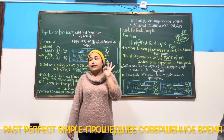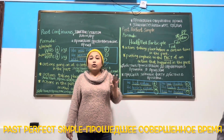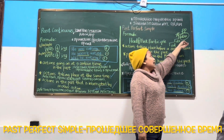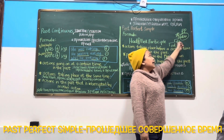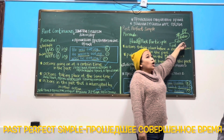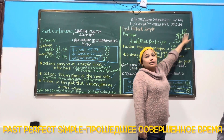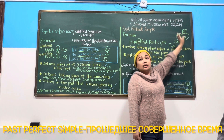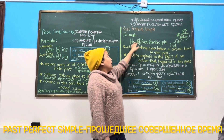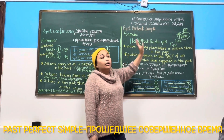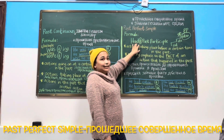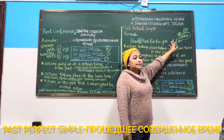Past participle is the third form of a verb — treti uraven glagol. For example: eat, ate, eaten; buy, bought, bought; see, saw, seen. The formula is very simple: with all pronouns we use 'had' plus the past participle.